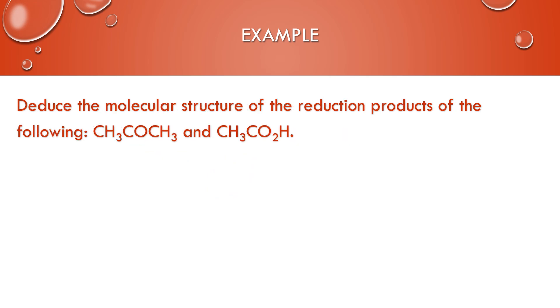So this question, we want to figure out the molecular structure of the reduction products of the following. So if I were to reduce this, this is a ketone. It's going to reduce to a secondary alcohol. And this is our carboxylic acid. It's going to reduce all of the way down to a primary alcohol instead.